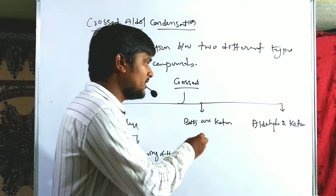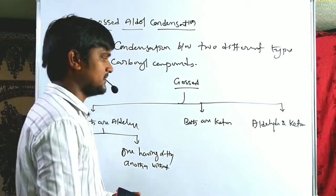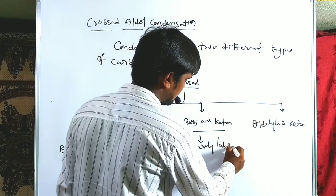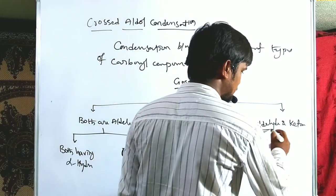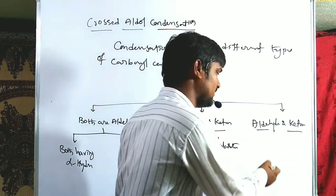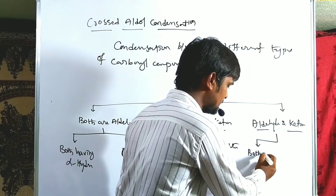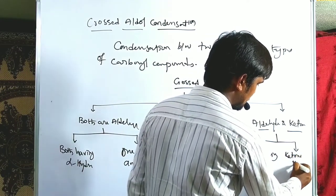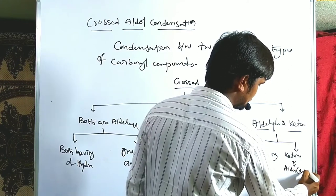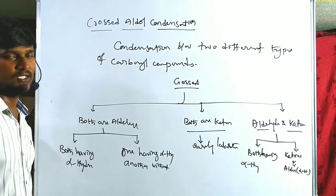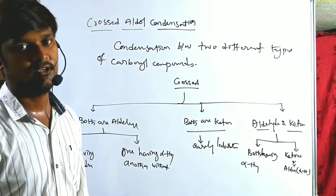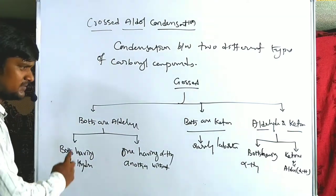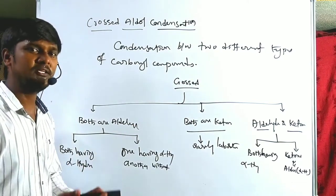Ketones are poor nucleophile acceptors, that's why ketones are rarely used in laboratory reactions. For the aldehyde and ketone combination, we have two sub-cases: both having alpha hydrogen, or the ketone has alpha hydrogen and the aldehyde is without alpha hydrogen. We have five types of carbonyl compound combinations, giving five types of crossed aldol products. In this lecture we discuss the mechanism, and in the second lecture we'll cover each category.